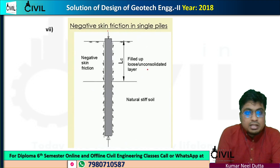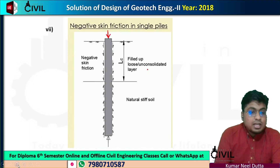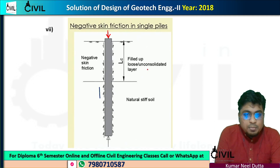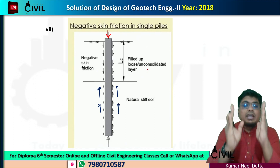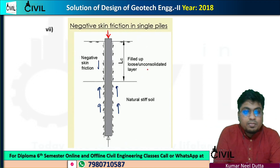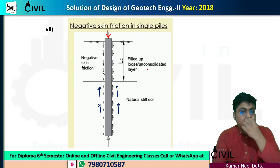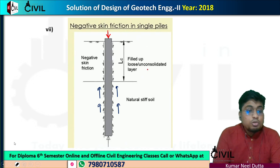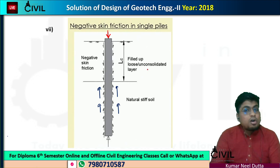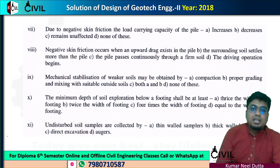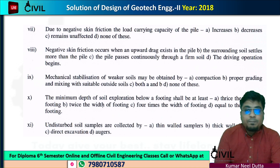If you have a pile, every reaction has an opposite reaction. If you are at the top, you have the same reaction in the soil. What is negative skin friction? You have not sent the reaction upward — it is a downward reaction. Due to negative skin friction, the soil provides an opposite downward reaction, so the load-carrying capacity will decrease.